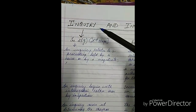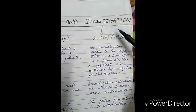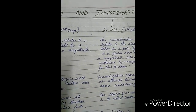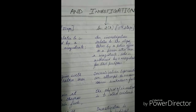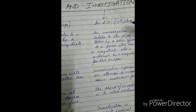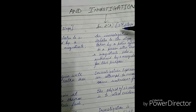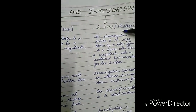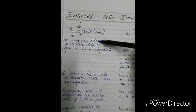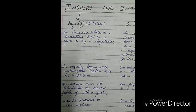Inquiry is defined under Section 2G and investigation is defined under Section 2H. Investigation is the first stage of any criminal proceeding, and inquiry is the second stage of criminal proceeding. Now we will see what each of these terms means.